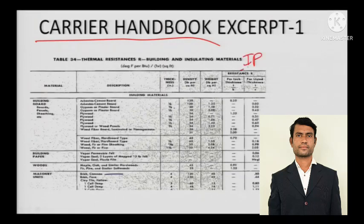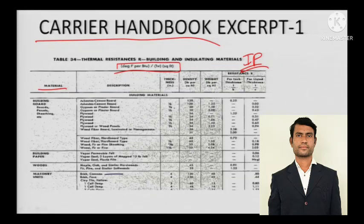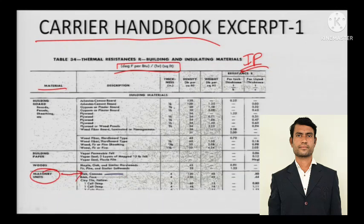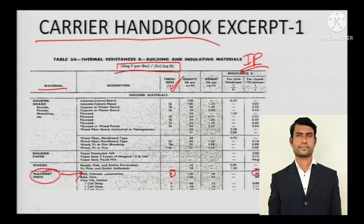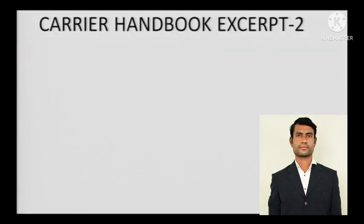The Carrier Handbook uses IP — imperial units — with degrees Fahrenheit and BTU per hour per square foot. Looking at the masonry units section, for brick common, 4 inches of thickness gives a resistance of 0.8. So for 8 inches you multiply by 2, for 16 inches multiply accordingly — just apply the appropriate multiplier to get the resistance for your specific brick wall thickness.